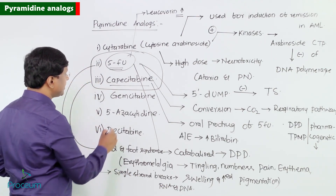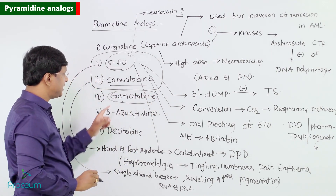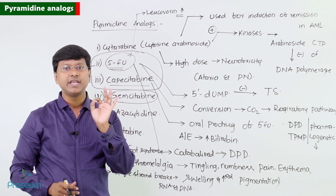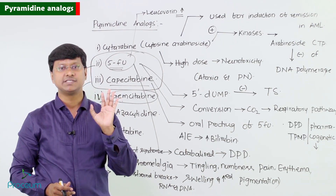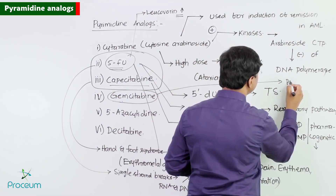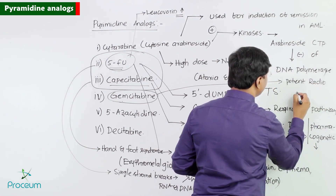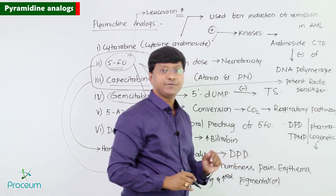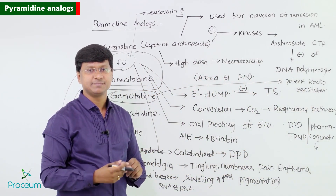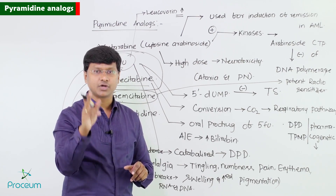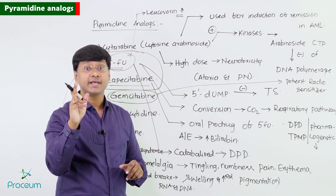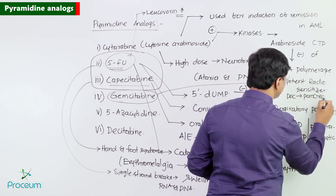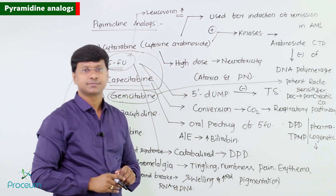Gemcitabine is a very potent radiosensitizer. Regarding its uses, gemcitabine is the drug of choice for pancreatic carcinoma.